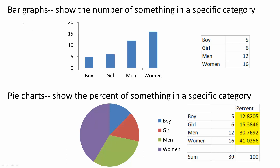In this video we will go over bar graphs and pie charts. Bar graphs show the number of something in a specific category. So this is some data we got: boys are 5, girls are 6, men is 12, and women is 16. If you want to represent this information, a good way to do this is using a bar graph.